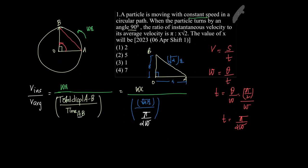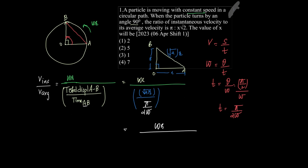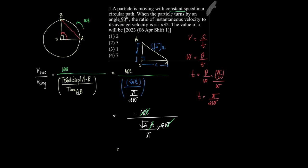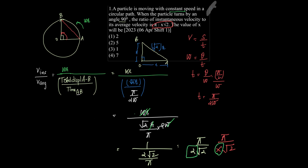Substituting, the ratio of instantaneous to average velocity is: ωr divided by (√2 · r divided by π/(2ω)). Simplifying: ωr · (π/(2ω)) / (√2 · r). The ω and r cancel, leaving π/(2√2). The question states this ratio equals π : x/√2, i.e., π / (x/√2). Comparing: x/√2 = 2√2, so x = 2. Therefore the correct answer is x = 2.